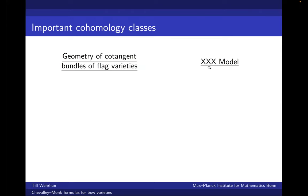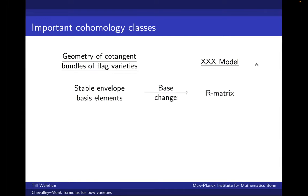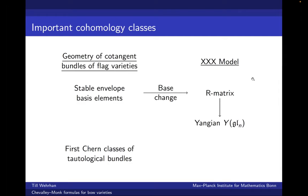Here we have the cotangent bundles of flag varieties and the XXX model. This theory comes with two important cohomology classes. On the one hand, we have the stable envelope classes or stable envelope basis elements. And on the other hand, we can relate them to the XXX model via the base change matrices. The base change matrix of different stable envelope bases gives the R-matrix of the XXX model. Having an R-matrix always gives us a Hopf algebra, and in this case it is the well-known Yangian of GL_N.